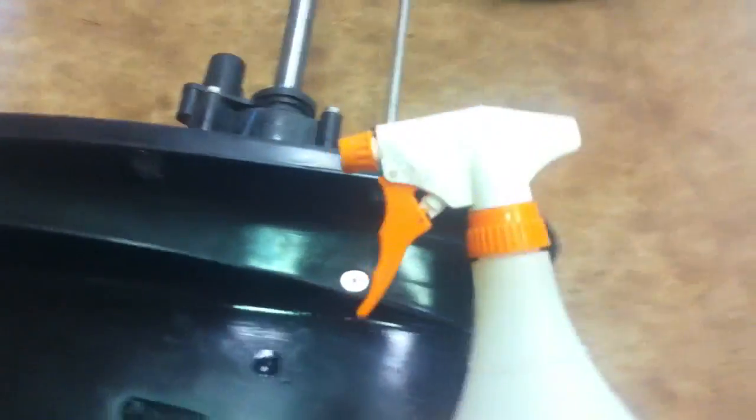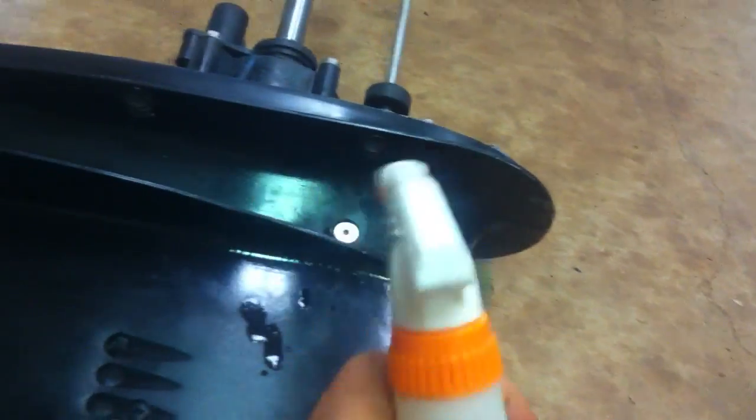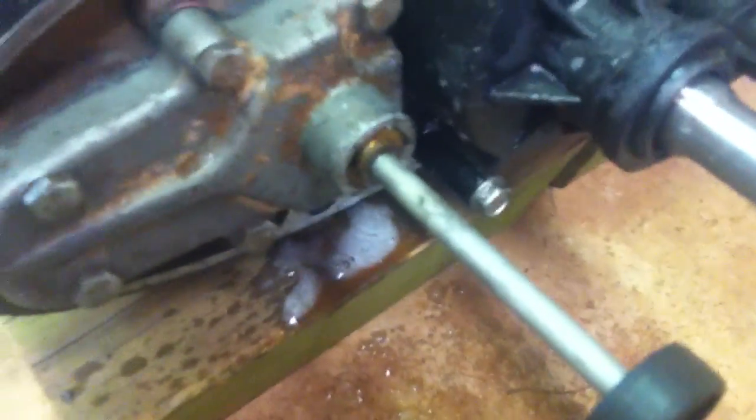But yeah, I got this spray bottle with some soapy water in it. I'm about to spray that all over the leak points up here. Let's see. Spray it on here. I'm going to move the shift rod. Before I did this, there was just bubbles coming out of here. Spray it all around here. Get all that good stuff.